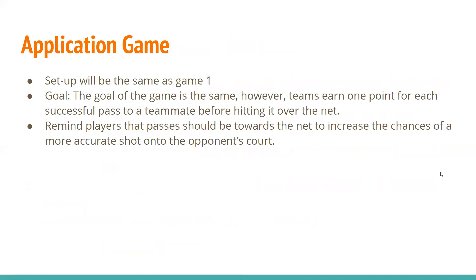Application game number two: set up is the same as game number one and the goal is the same. However, teams earn one point for each successful pass to a teammate before hitting it over the net, putting emphasis on working together as a team so everybody enjoys the game. Remind players that passes should be directed toward the net to increase the chance of a more accurate shot onto the opponent's court.